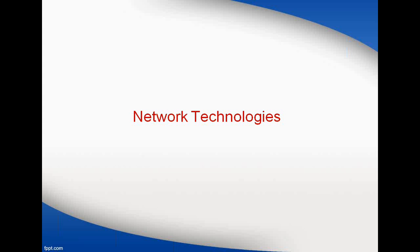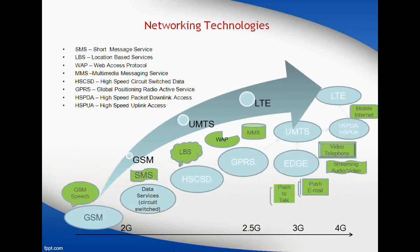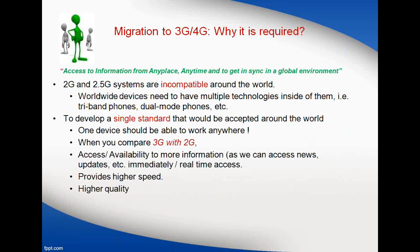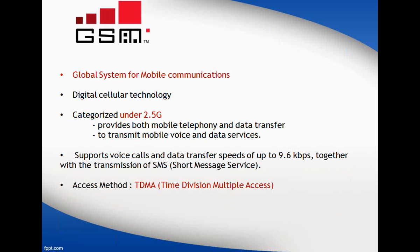The first one is GSM — Global System for Mobile Communications. It's a digital cellular technology categorized under 2.5G. You can see the evolution from 2G to 2.5G: we have basic circuit switched data, HSCSD, then GPRS added. Together these make 2.5G, providing call and data services. It supports voice calls and data transfer speeds up to 9.6 kbps, together with SMS transmission. When GPRS was included, we achieved both GPRS and GSM services.